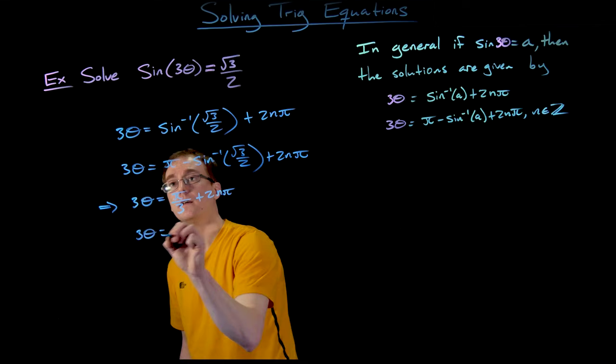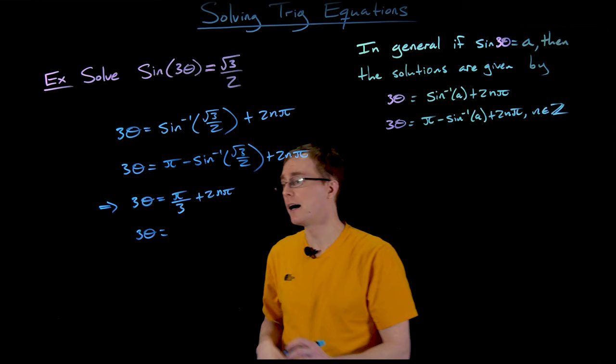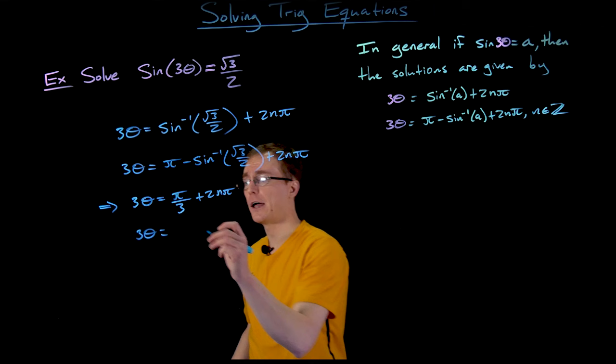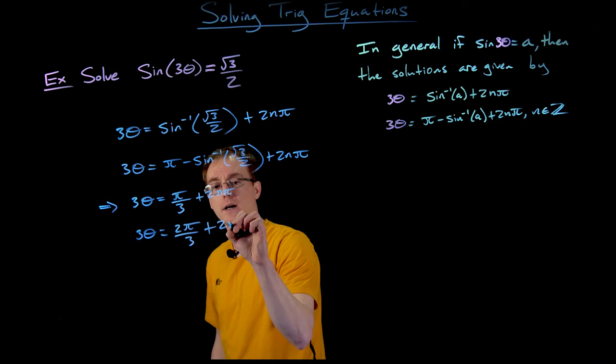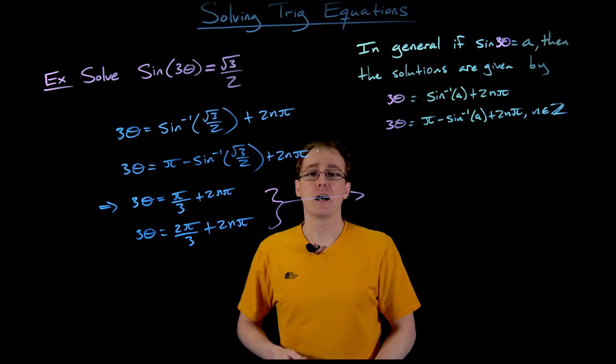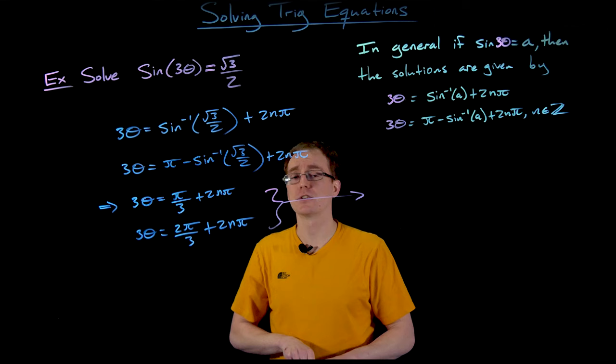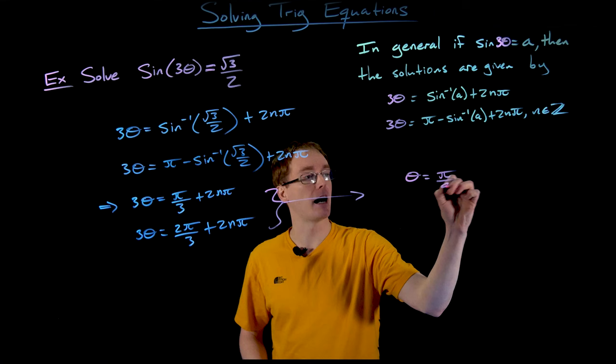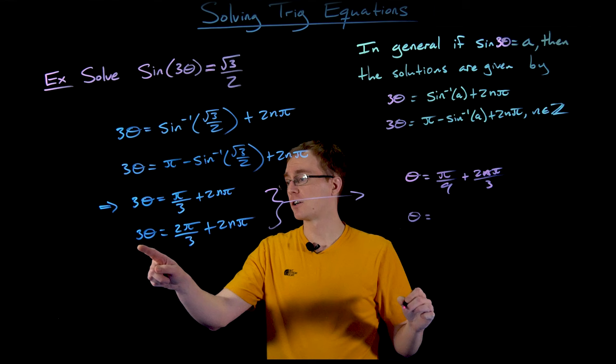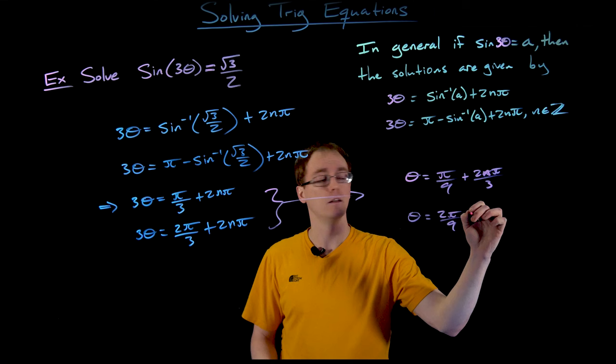That makes our first equation become 3 theta equals pi over 3 plus 2n pi. Our second equation becomes 3 theta equals pi minus pi over 3, which gives us 2 pi over 3 plus 2n pi. To finish and fully simplify our solution set, all we have to do is solve for theta by dividing both sides by 3. That makes the first equation theta equals pi over 9 plus 2n pi over 3, and the second equation theta equals 2 pi over 9 plus 2n pi over 3.